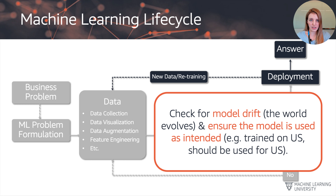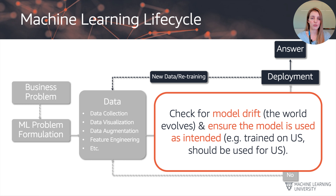Assuming we've met the business goals, we're on the upward path leading to deployment. Since the world around us doesn't remain static — customer behavior changes, many things can change — we need to check for what is called model drift. We should also provide information on how the model is intended to be used, including its limitations. This should have been discussed in the problem formulation stage and can really help limit the misuse of the model.